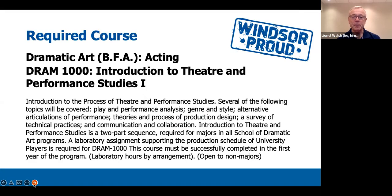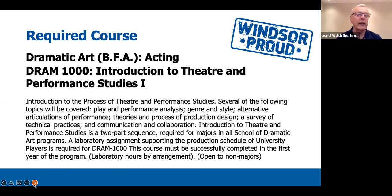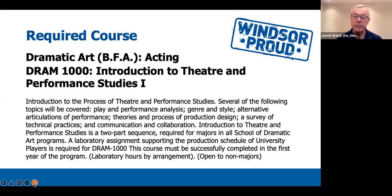The first course is a required course for all Dramatic Art majors. It's called Introduction to Theatre Performance Studies 1, Drama 1000. Several of the following topics will be covered: Play and Performance Analysis, Genre and Style, Alternative Articulations of Performance, Theories and Process of Production Design, A Survey of Technical Practices, and Communication and Collaboration. It's a two-part sequence required for all majors in the School of Dramatic Art, and you will have a lab assignment supporting the production schedule of the university players.